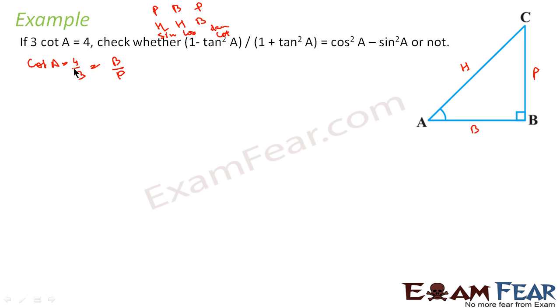We find the value of H, which is AC. AC will be root of AB square plus BC square, which equals root of 4 square plus 3 square, that is root of 16 plus 9, that is root of 25, which is 5. So AC is 5.